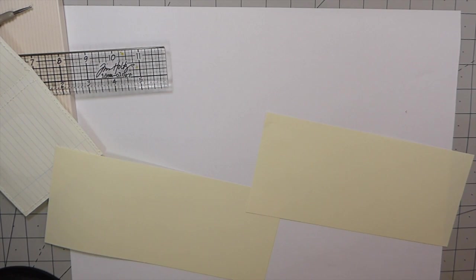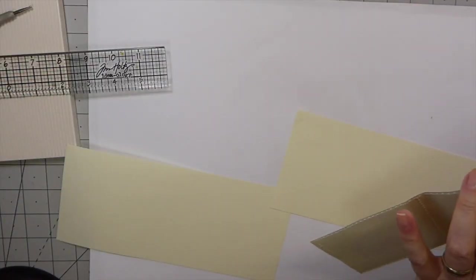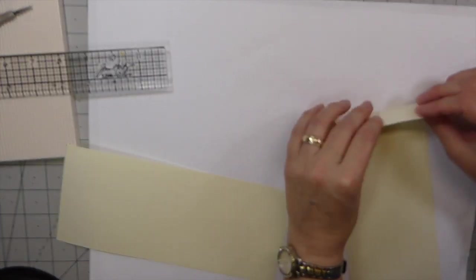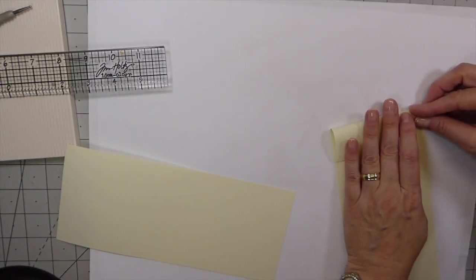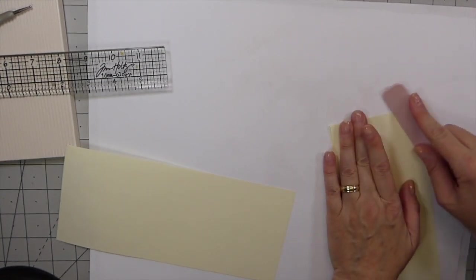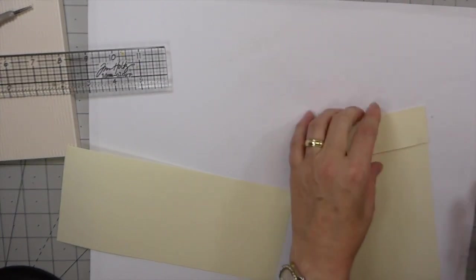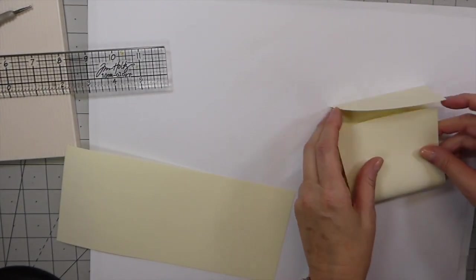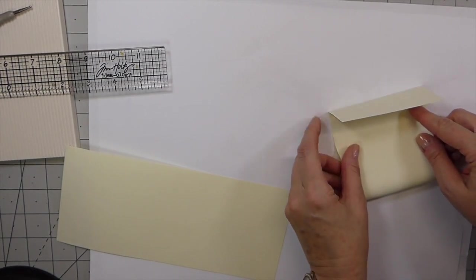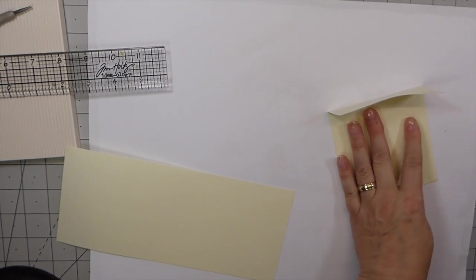Obviously you can adapt this to whatever size journal you're working with. There's just a couple of little things I want to point out on this that I learned by creating this one. First thing you want to do is just fold that down, and then fold this back up. The measurements don't matter, you can fold it all the way in if you want to. I always like to leave a little bit of a gap.